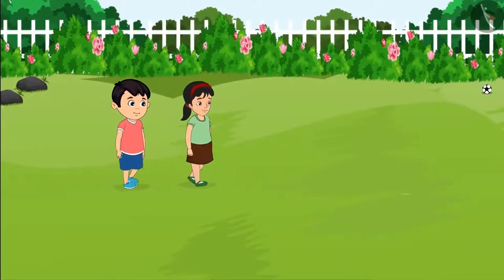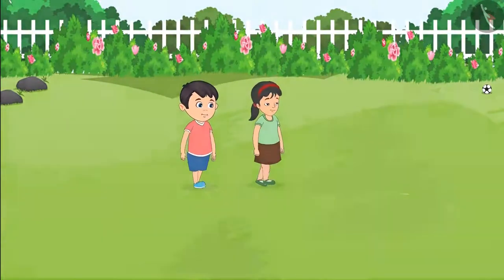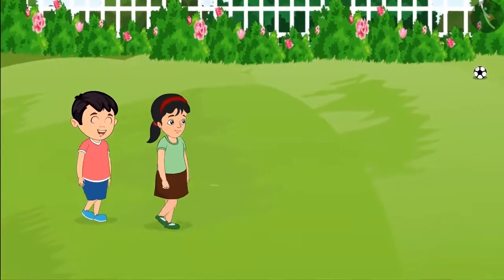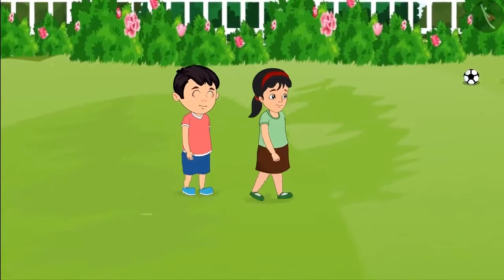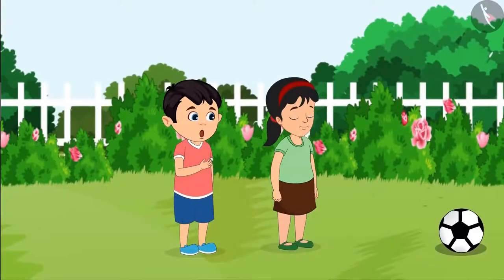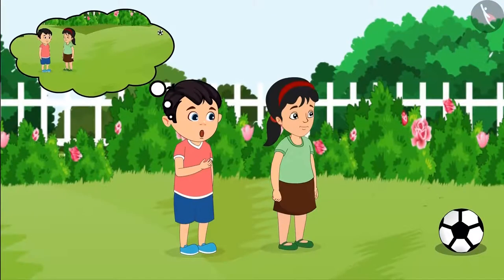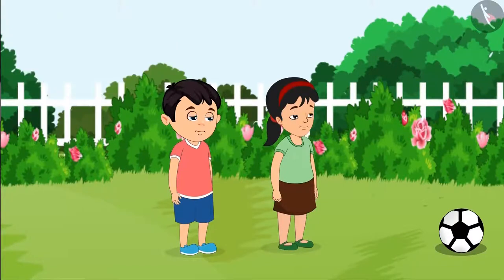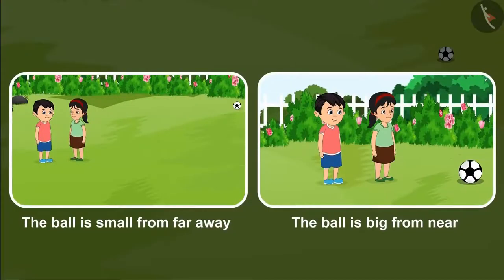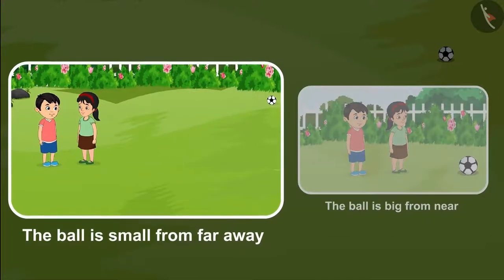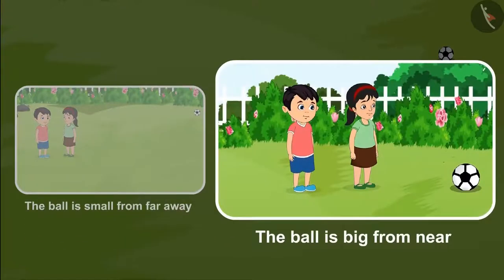Pinky and Chotu went near the ball. Chotu says: Pinky, this ball is looking bigger as we are coming closer to it. See Pinky, this ball was looking small, now it is looking big. Why is it so? Pinky replies: you are right, Chotu. It is a big ball. Children, Chotu felt that the ball was small from a distance, and when he went near, it looked big.